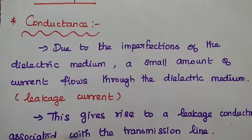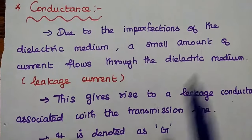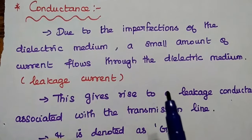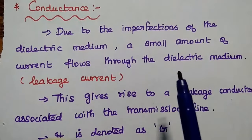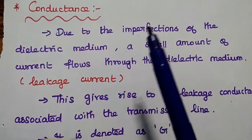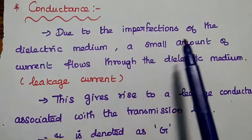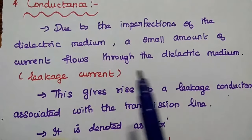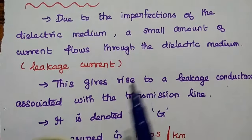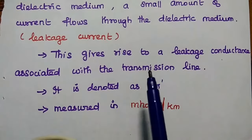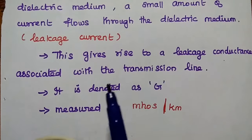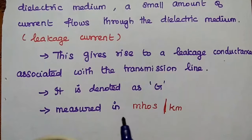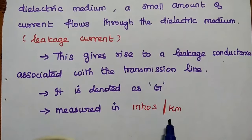The next parameter is conductance. Due to the imperfections of the dielectric medium — the dielectric medium is not a perfect one and there may be some imperfections — a small amount of current flows through the dielectric medium. This is called leakage current, and it gives rise to a leakage conductance associated with the transmission line. It is denoted as G and measured in terms of Mhos per kilometer.